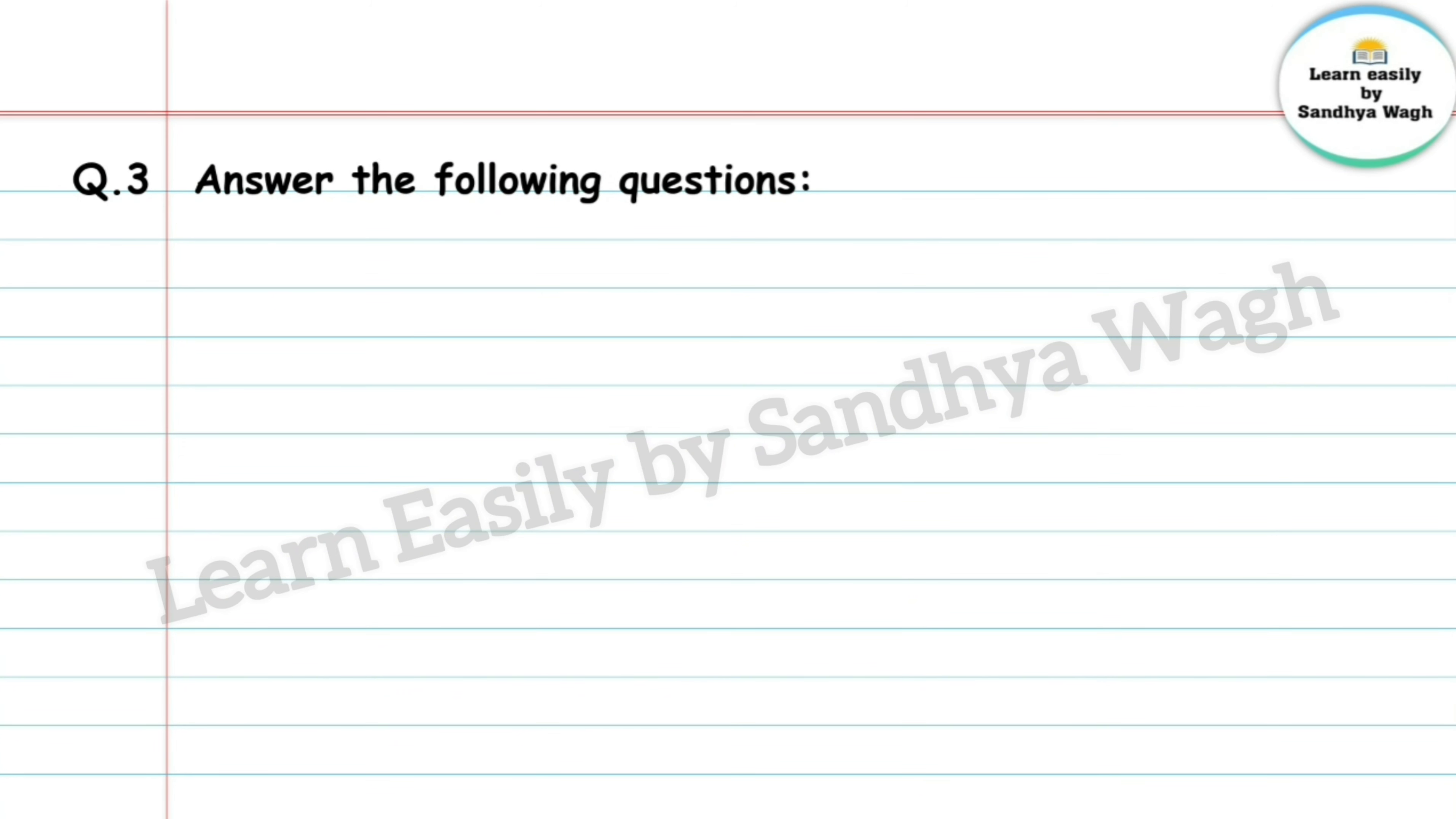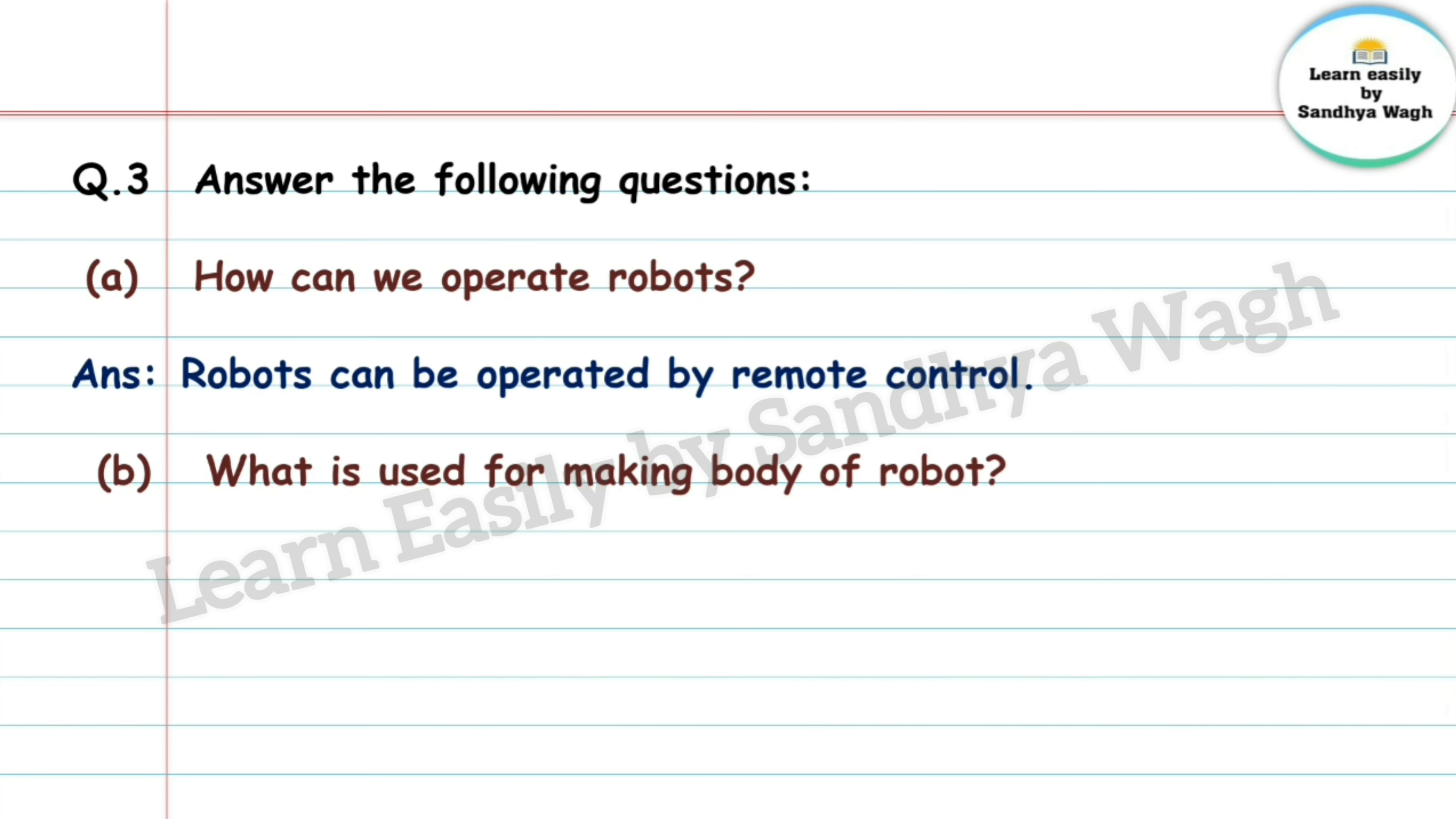Question 3: Answer the following questions. A. How can we operate robots? B. What is used for making body of robot? Answer: Mechanical parts are used for making body of robots.